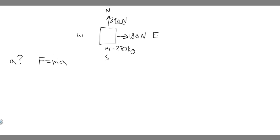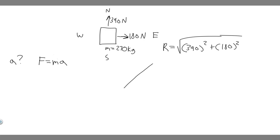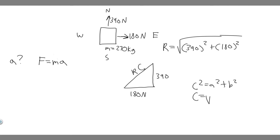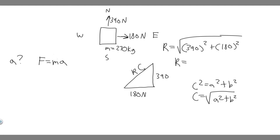So we've got to find the resultant of these two forces. The resultant is equal to the square root of one force squared plus the other squared — √(390² + 180²). You can see how this works by the Pythagorean theorem: the force in the x-direction is 180 newtons, the force in the y-direction is 390 newtons, and the resultant is the hypotenuse. So c = √(a² + b²), which gives us R = √(390² + 180²) ≈ 430 newtons. It's actually 429.53, so I'm rounding to 430. That's the resultant force.